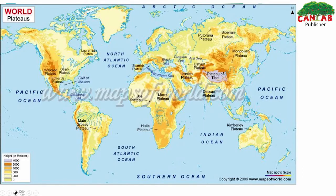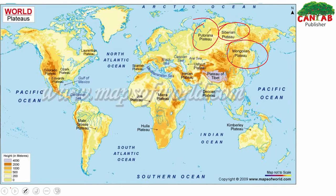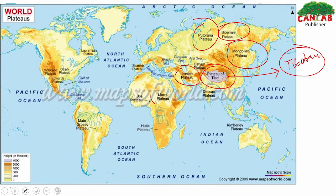Looking at the world map, different plateaus are shown. These include the Mongolian Plateau, Siberian Plateau, Putorana Plateau, Iranian Plateau — the world's largest plateau — as well as the Mara Plateau in Africa, Holian Plateau, Mato Grosso Plateau, Colorado Plateau, and Spanish Plateau, among others found across the world.